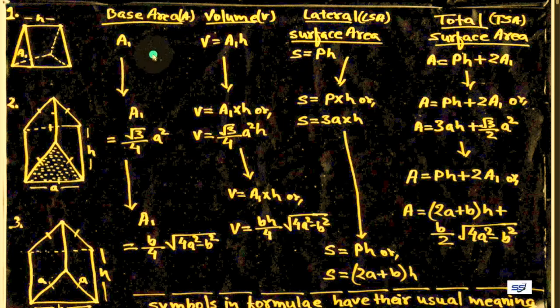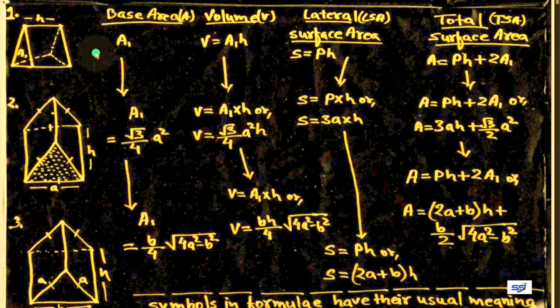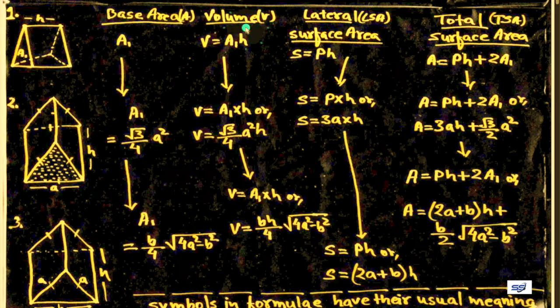We are given a figure of a prism and we have to find the base area, volume, and lateral surface area of the prism.